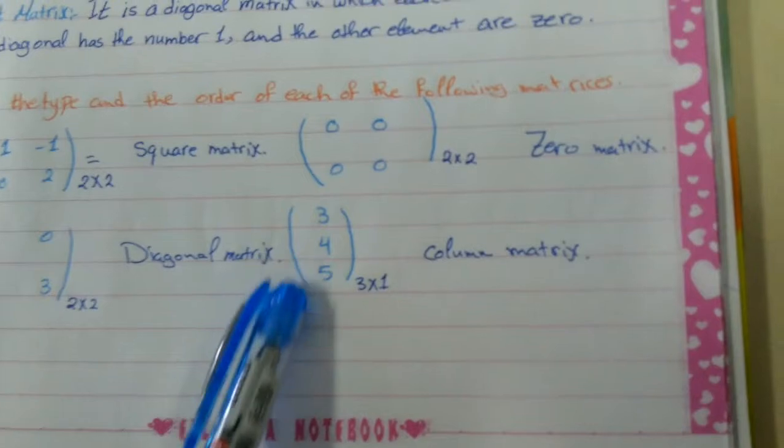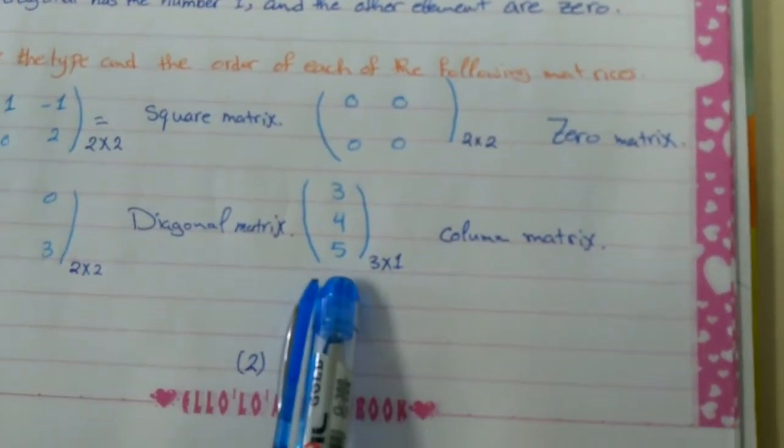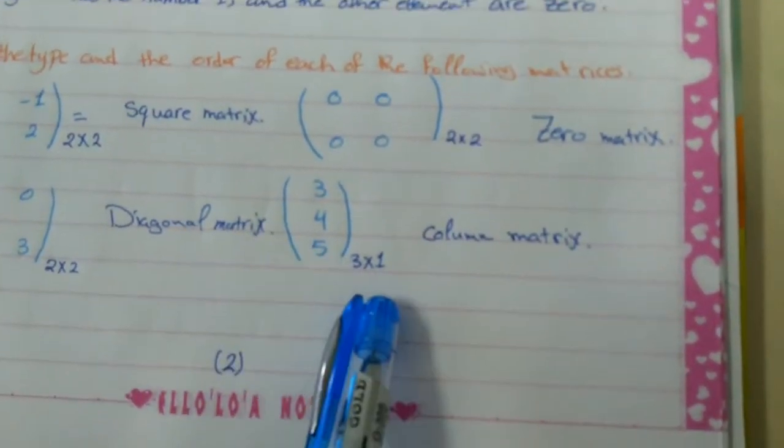The last one, it's only one column. We say this is column matrix. Order is 3 times 1.